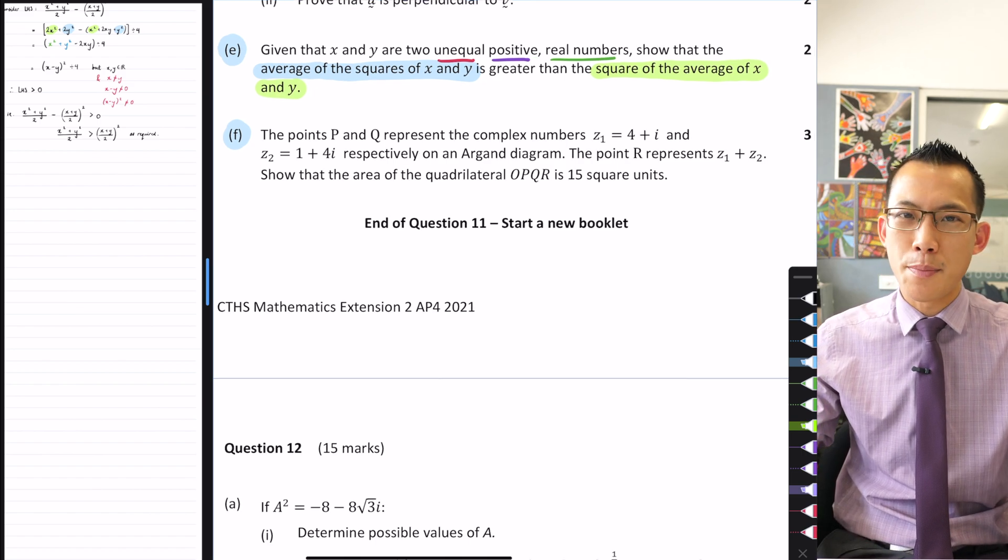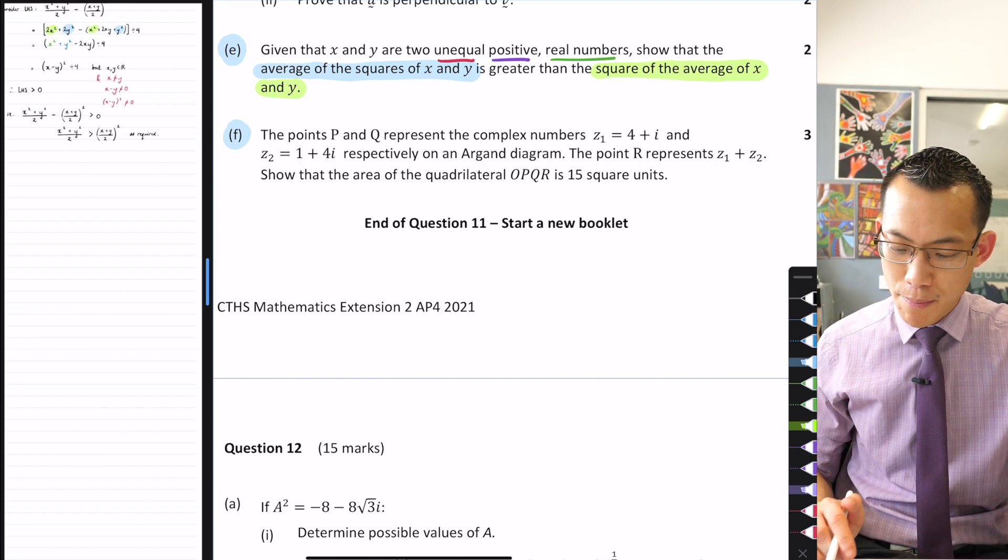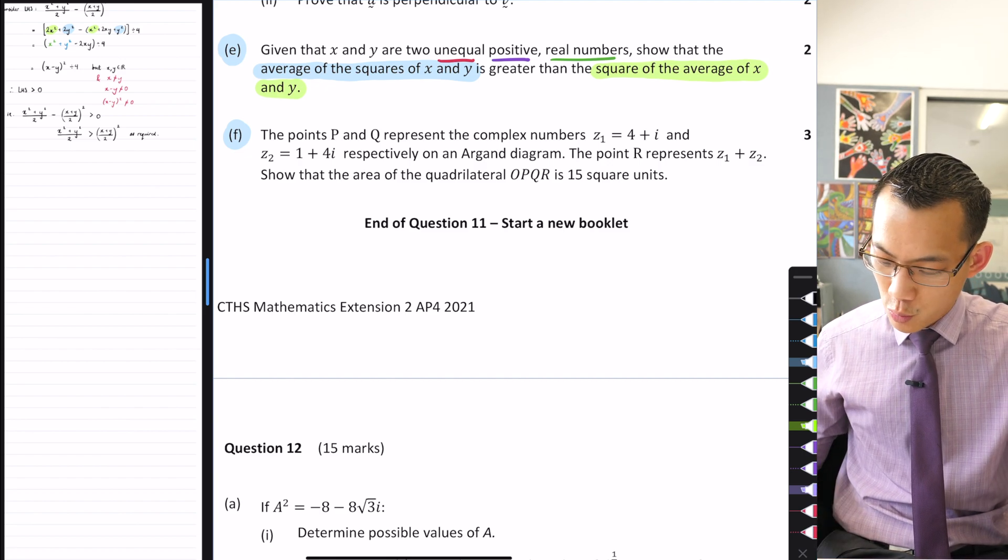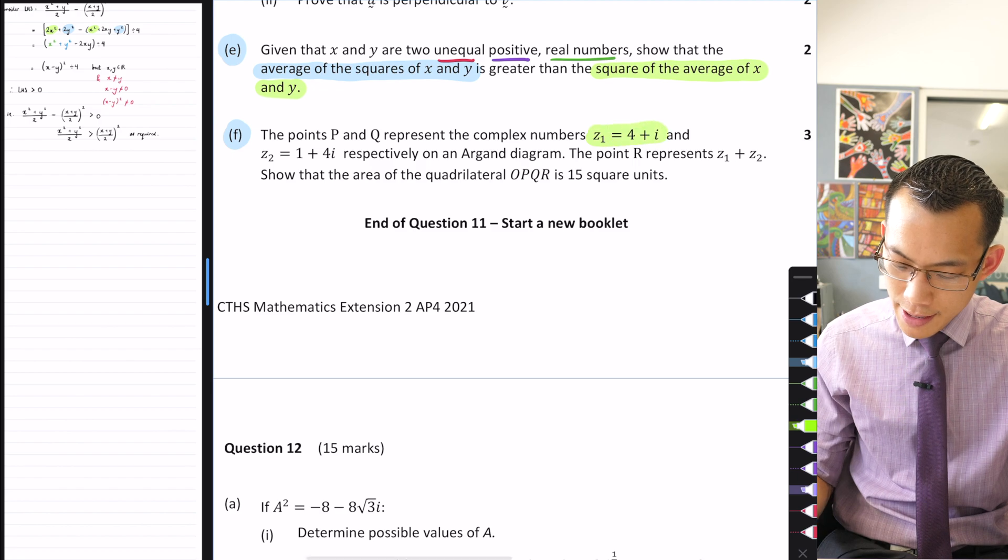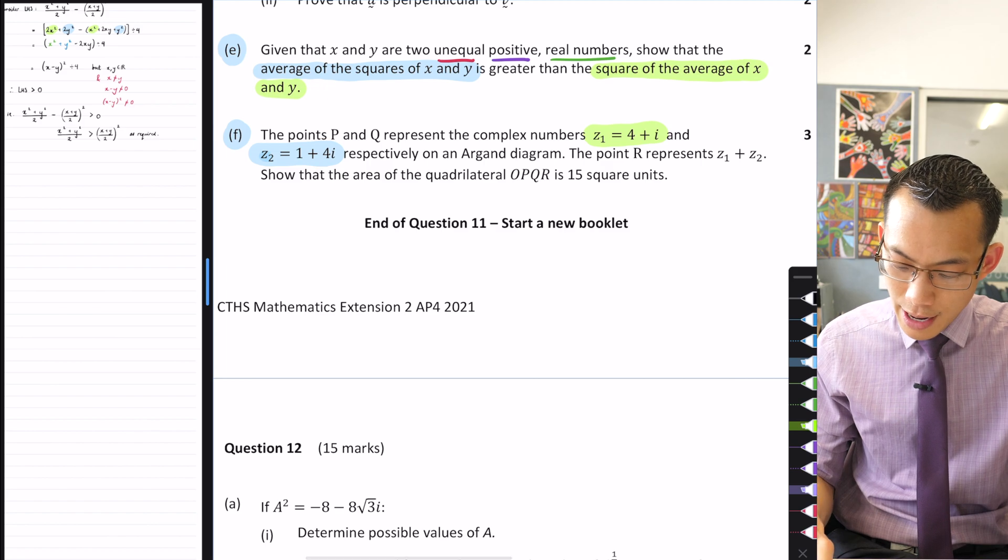Our next question is part F. It sends us back onto the complex plane. The points P and Q represent the complex numbers Z1, which is equal to 4 plus i, and Z2, which is equal to 1 plus 4i, respectively, on an Argand diagram.